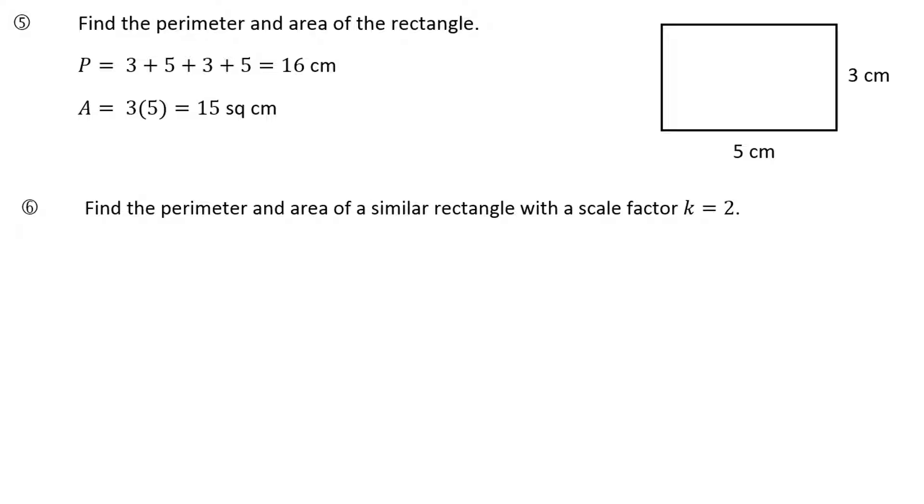Scale factor of 2, so we have to take the original perimeter and multiply by 2. Now of course with the area, instead of multiplying by 2, we take the original area and multiply by 2 squared, so we actually have to do 15 times 4, and that will give us 60. So the perimeter of the new rectangle is 32 centimeters, perimeter 60 square centimeters.